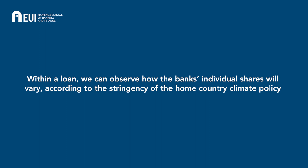The loan fixed effect is going to play a crucial role because this exercise is called a within-loan exercise, and one can start arguing that the effect is mainly coming from the bank side. We're going to have the stringency in the home country, the banks are going to look for opportunities abroad to lend, and we're going to pin down all the characteristics of the loan and also of the borrower in those countries abroad with this loan fixed effect. Within loan, we can then observe how the bank's individual shares vary according to the stringency of the home country climate policy.